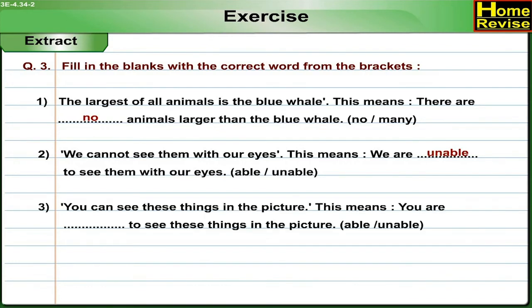3. You can see these things in the picture. This means you are ___ to see these things in the picture. Able/Unable. Answer: This means you are able to see these things in the picture.